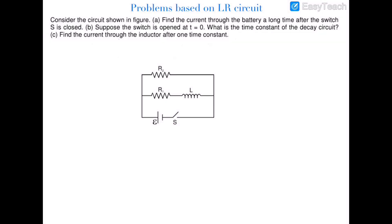In this question we have to find out the current through the battery after a long time when the switch is closed, and in the second part, suppose the switch is opened at t = 0: what will be the time constant of the decay circuit and the current through the inductor after one time constant? Starting with section (a): find the current in the circuit after a long time with the switch closed.